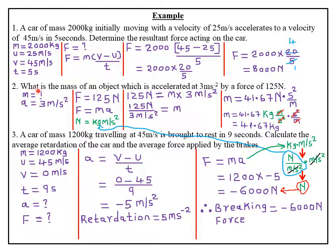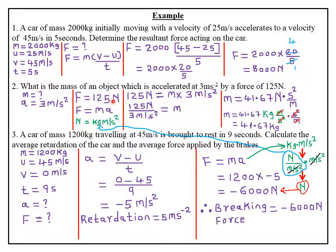In our second example: what is the mass of an object which is accelerated at 3 meters per second squared by a force of 125 newtons? We just highlight what we have been given. We are asked for the mass, so M is unknown. The acceleration a is 3 meters per second squared, and the force F is 125 newtons.